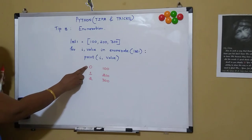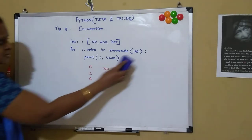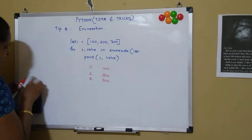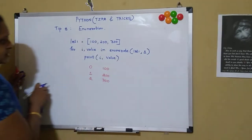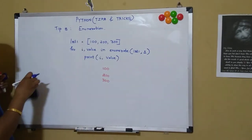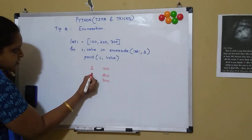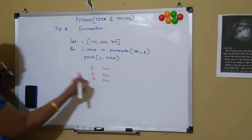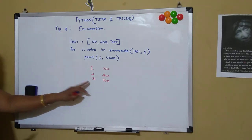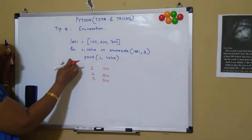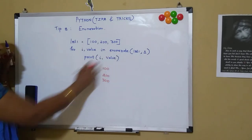Now if I don't want my index to start with 0 and instead want it to start with 1, I can just give list1 comma 1 — that is the start index is 1. So my index does not start with 0, it will start with 1, 2, and then 3. We can give any value; if I give 40 it will start from 40, 41, 42. So a simple way of getting the index value while looping through an iterable is by using the enumerate function. This was tip number 8.